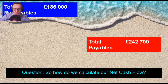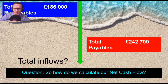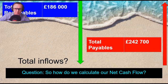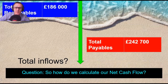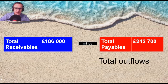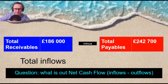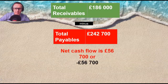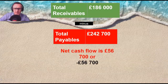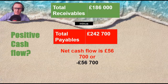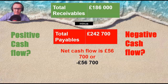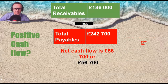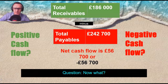So you need to work out the net cash flow. There are your inflows coming in, and outflows going out. The outflows number is bigger than the inflows. There is a calculation: total inflows minus total outflows. Total receivables: £186,000. Total payables: £242,700. That gives us a net cash flow answer of minus £56,700. So is this a positive cash flow or a negative cash flow? It's in red — sometimes we put it in red in accounting. The answer is: it's definitely negative cash flow.